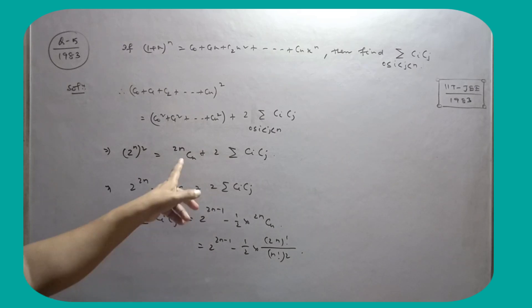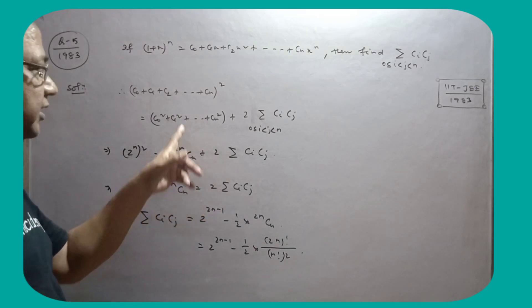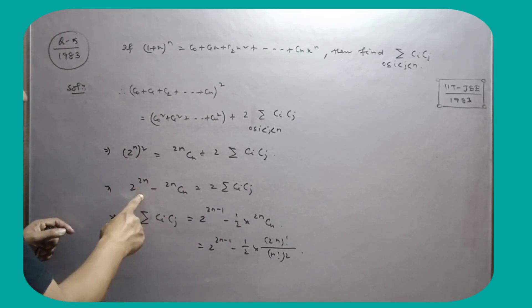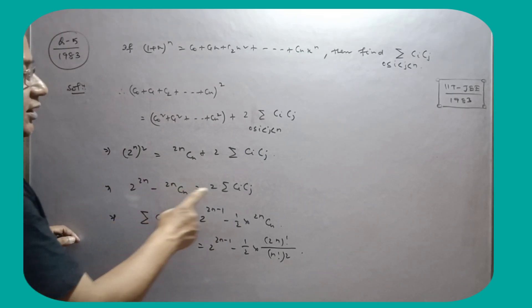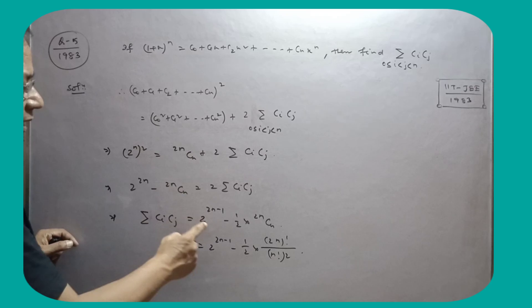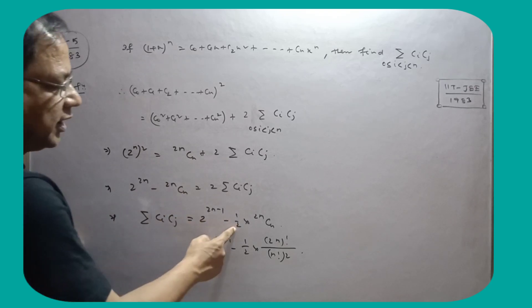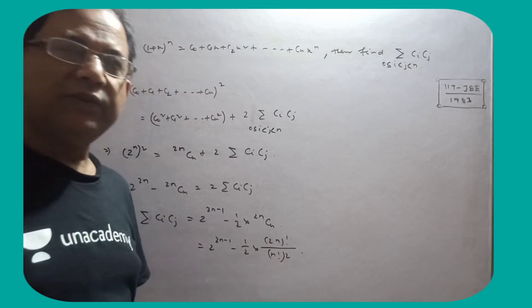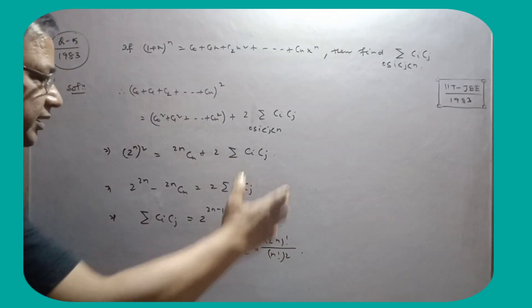So the value is 2 to the power 2n divided by 2, which gives 2 to the power 2n-1 times half into 2nCn. 2nCn means 2n factorial by n factorial times n factorial, nothing else.